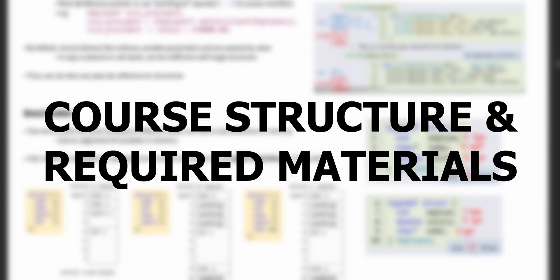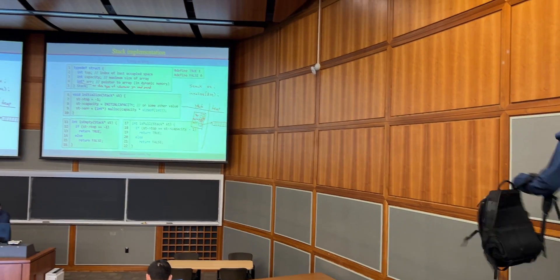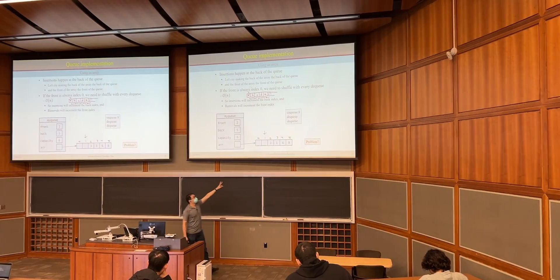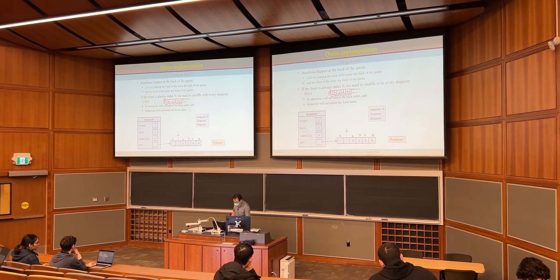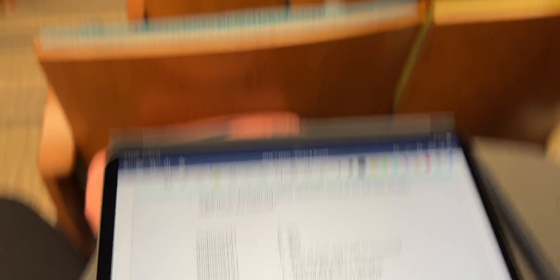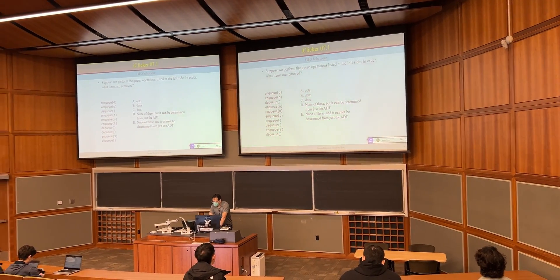Let's get into how CompSci 259 will be structured for any given week and the materials you'll need for this course. Each week you will have three hours of lectures to attend, where the professor will explain the main course concepts through a mixture of theory, discussions, and some examples. In our year, these lectures were live streamed on Zoom and were recorded for future use, and the annotated lecture slides were posted on Canvas after each lecture. iClicker questions may be asked during class and count towards a participation grade at the end of the term — you just have to answer the question to get the mark, you don't necessarily have to get it correct.